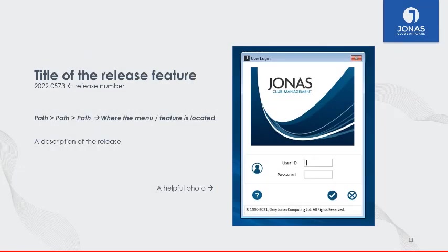Before moving on to what's new, I want to point out what you'll see throughout this webinar. At the top of each slide is the title of the release feature, below that is the release number — you need to be on that version of Jonas to have access to that update. This is why we encourage you to regularly update your Jonas system. Below that you'll find a file path showing where that feature or menu is located, and below that a description of the release.